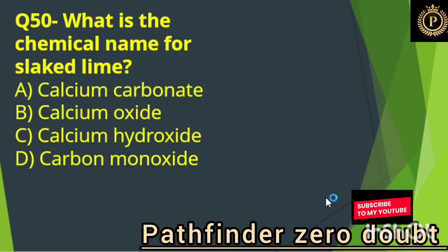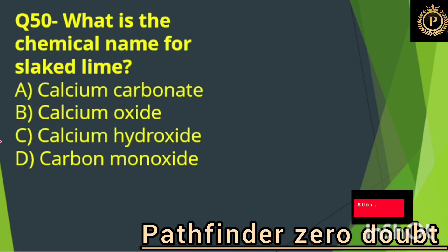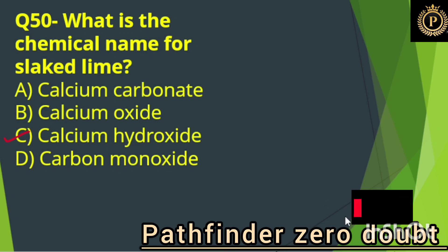What is the chemical name for slaked lime? Option C, calcium hydroxide.